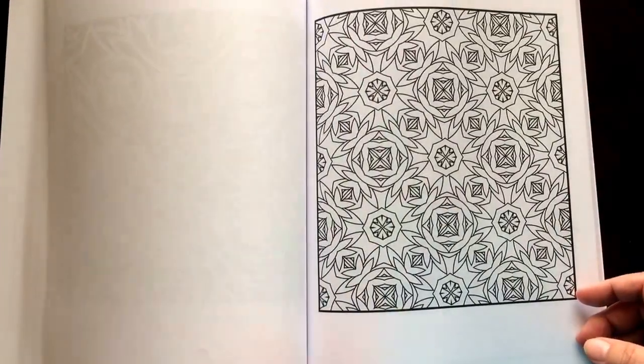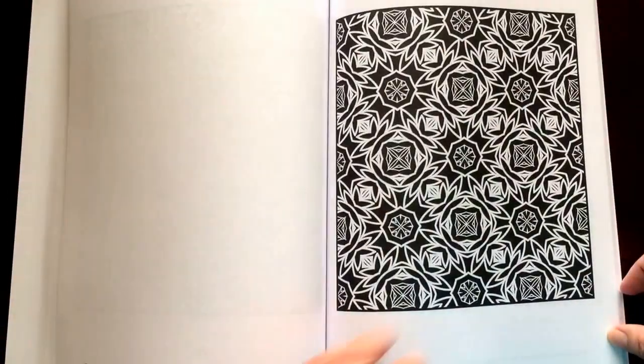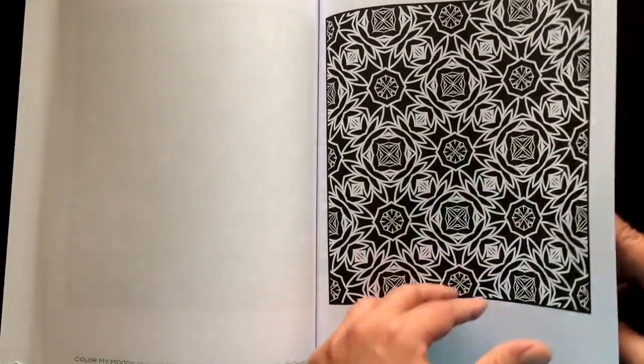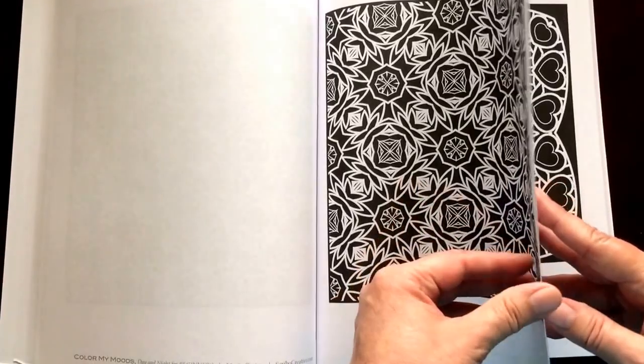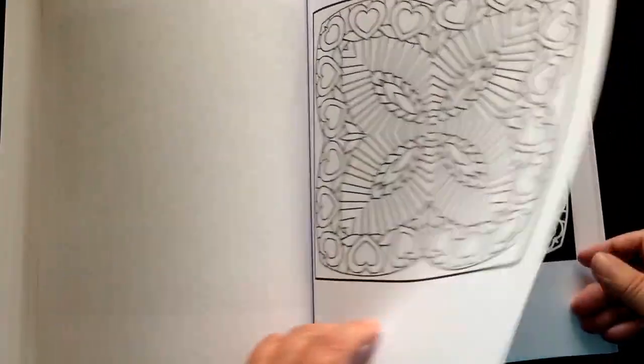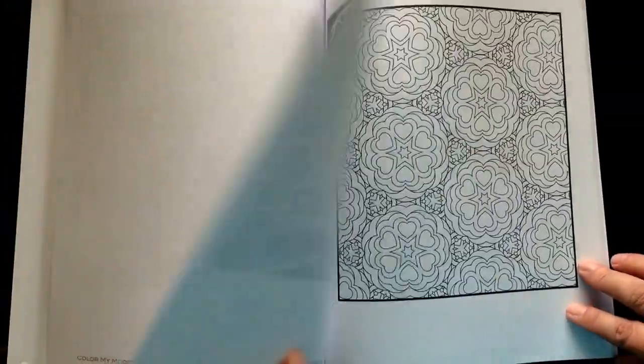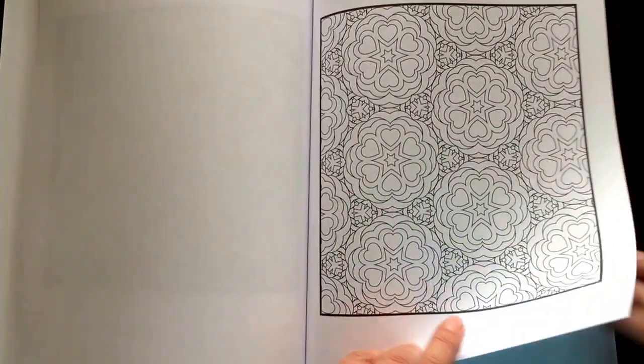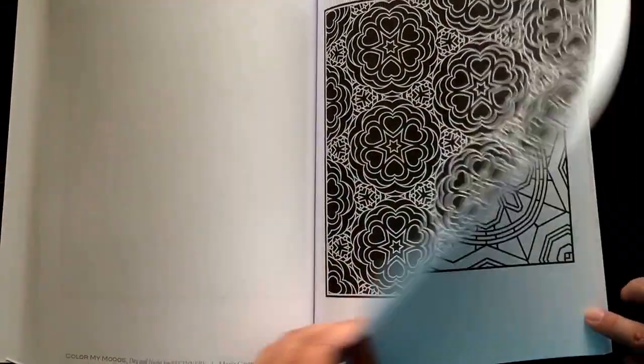All of the illustrations are single-sided. If you use markers, please put in a sheet of card stock or an extra couple of sheets of paper so you don't have any bleed through to the next page.